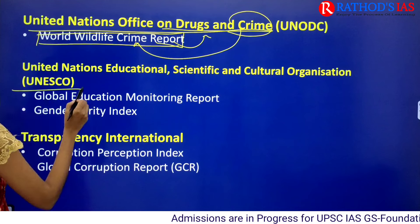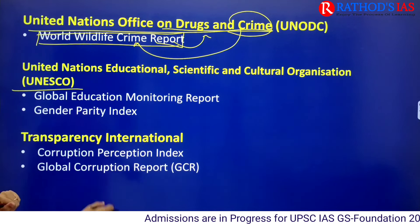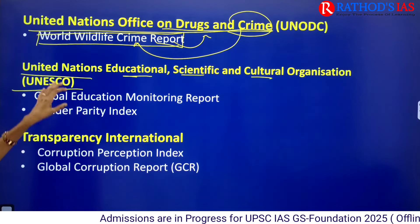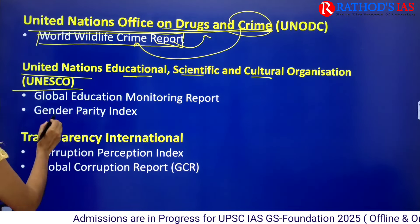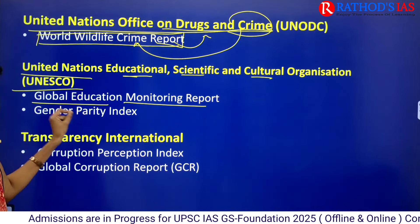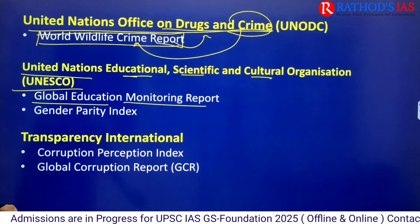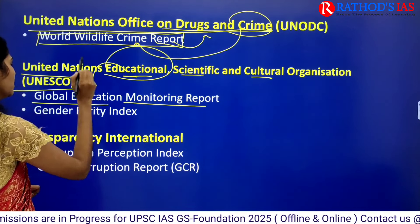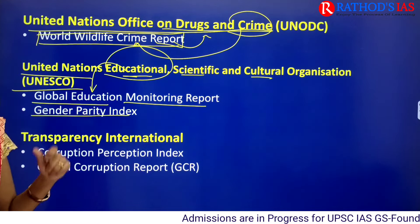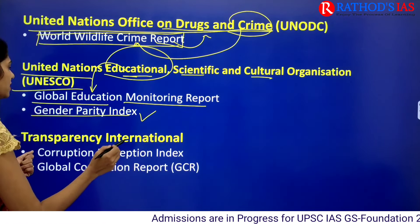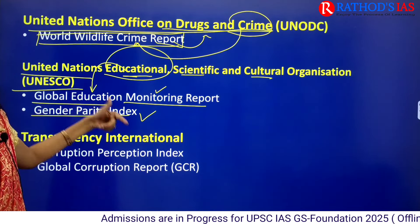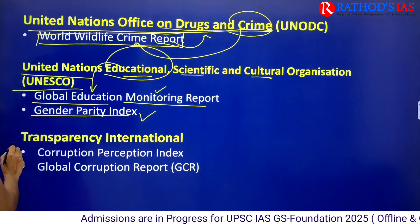Next is UNESCO — United Nations Educational, Scientific and Cultural Organization. UNESCO releases two reports: the Global Education Monitoring Report, which is education-related, and the Gender Parity Index. These two reports — Global Education Monitoring Report and Gender Parity Index — are released by UNESCO.